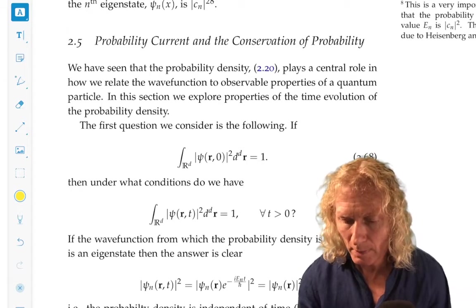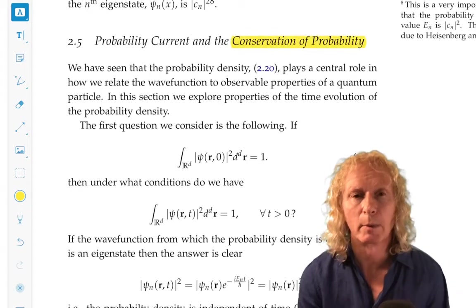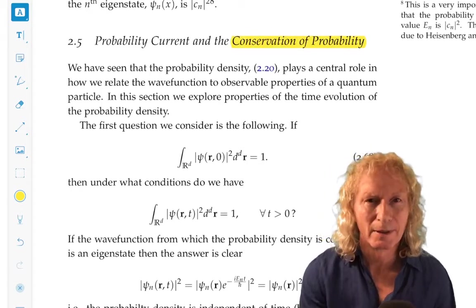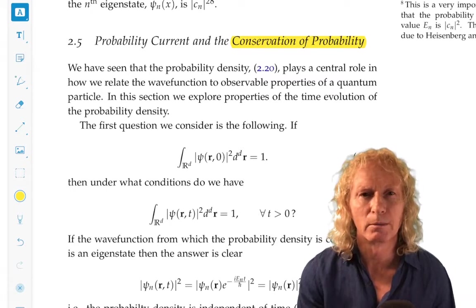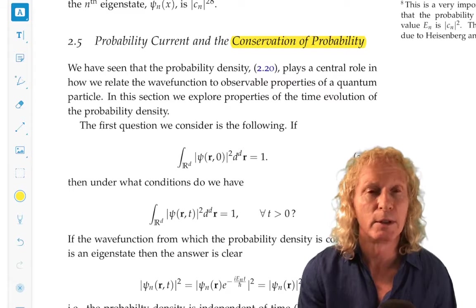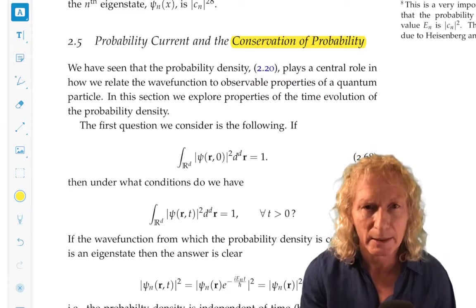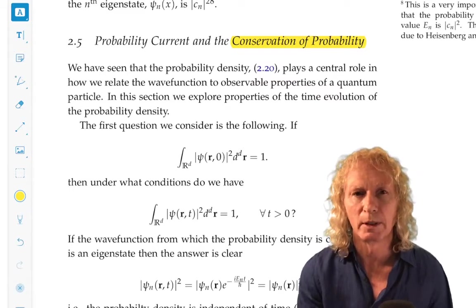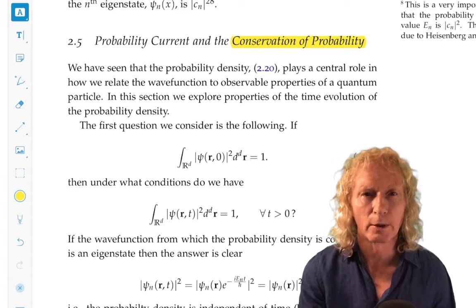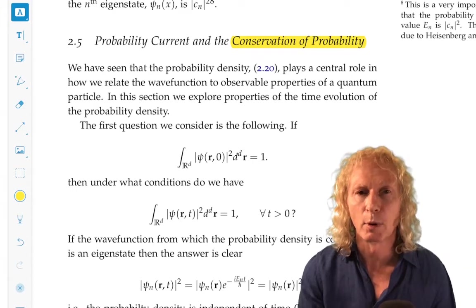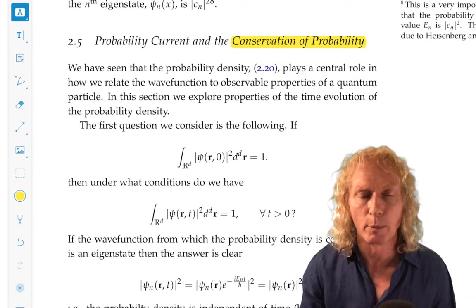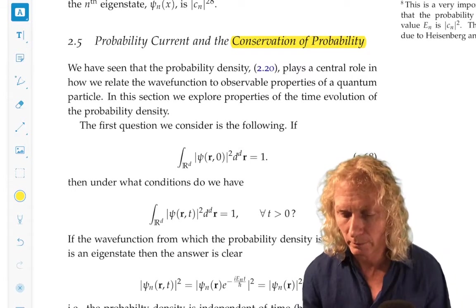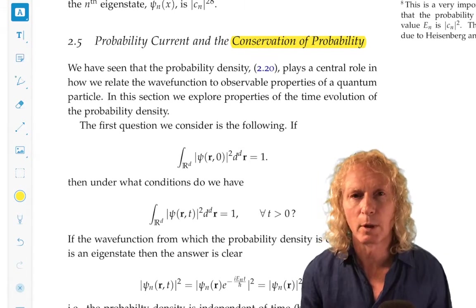So, what do we mean by conservation of probability? Before we get started, keep in mind, I want you to make sure you're aware all the time of the difference between probability density and probability. Probability density is the magnitude squared of the wave function, and the probability is the integral of that over the appropriate region of interest. So conservation of probability.